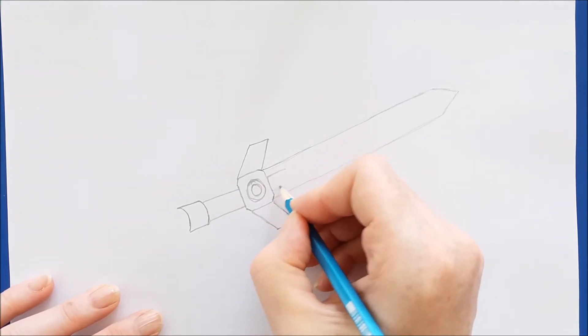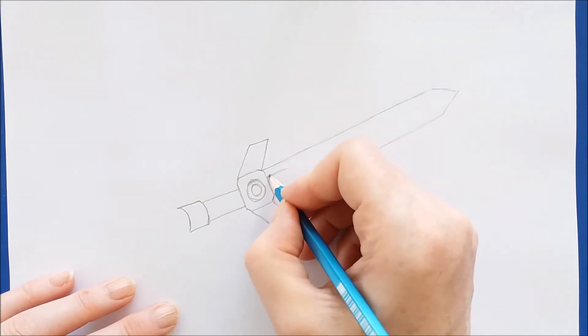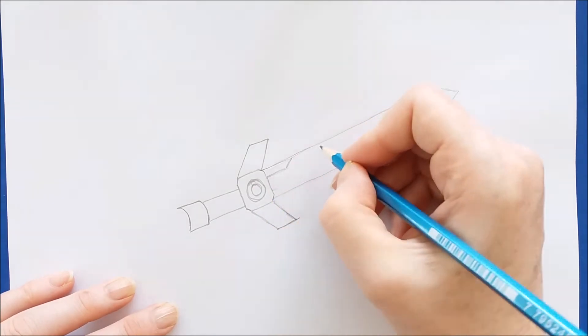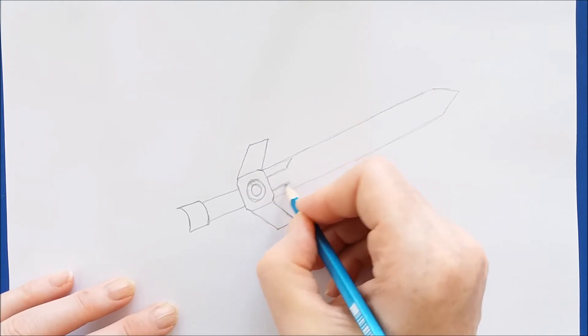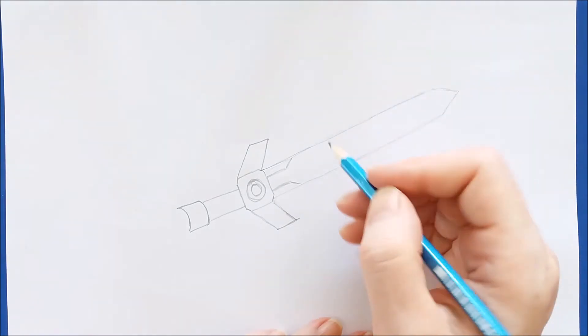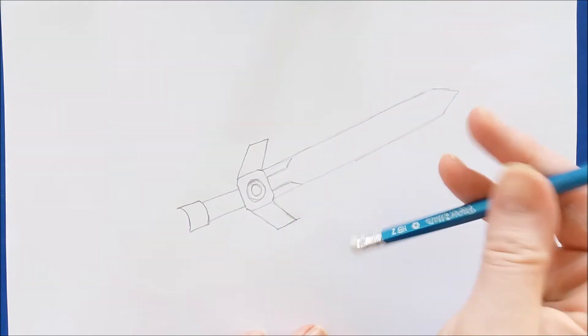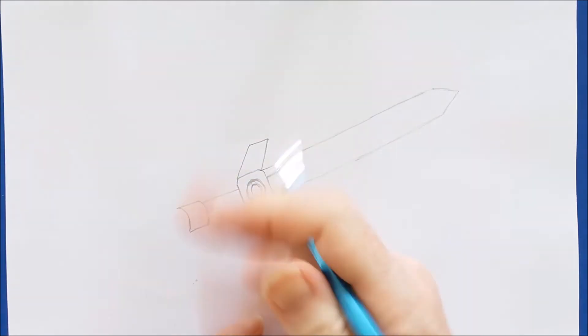The next thing we need to do is to add the detail to the top of the sword, and I'm going to draw two parallel lines outward on the top of the sword here. This sword has some hexagonal shapes in it, and we will do that as soon as we get the parallel lines drawn.